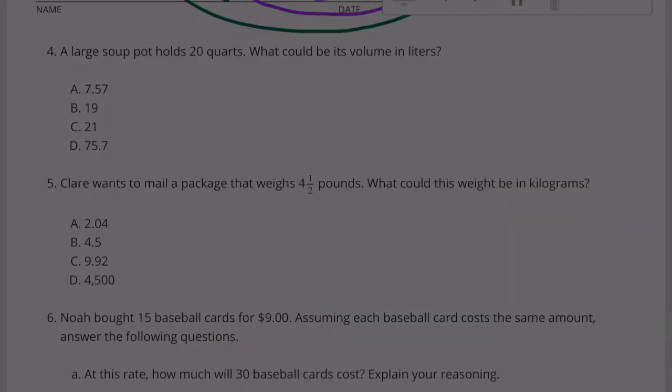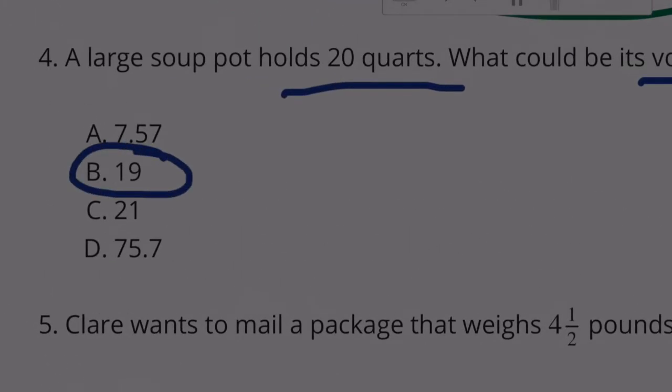Problem 4: A large soup pot holds 20 quarts. What could be its volume in liters? One liter is slightly larger than a quart, so it would take slightly fewer liters than quarts to measure the same volume. So I'm looking for something that's slightly smaller than 20 quarts. And B, 19, is slightly smaller than 20 quarts, so 19 liters would be just about the same as 20 quarts.